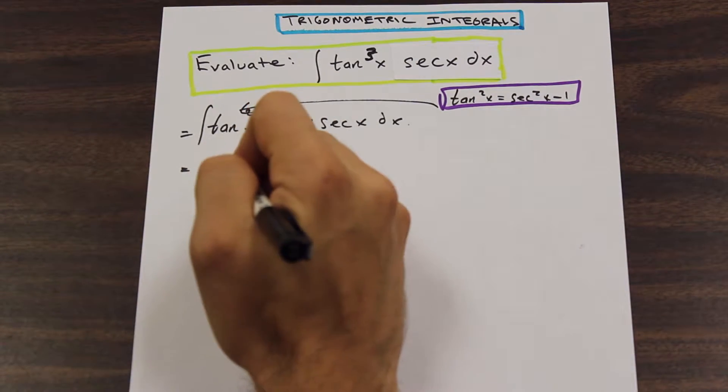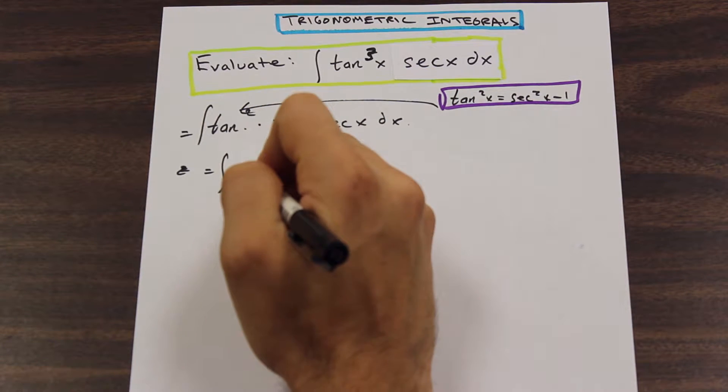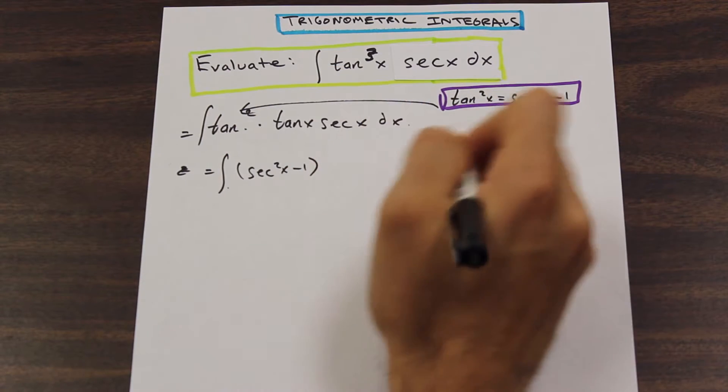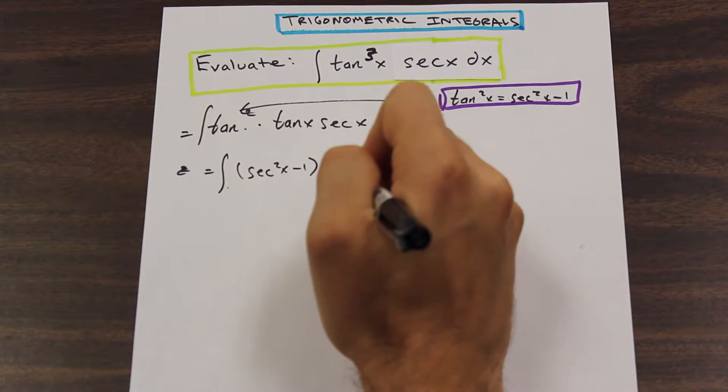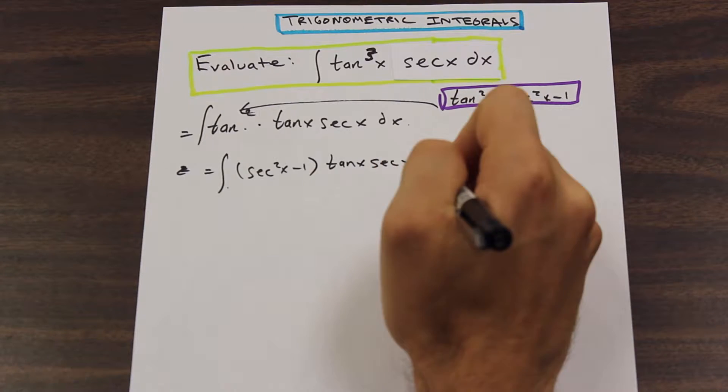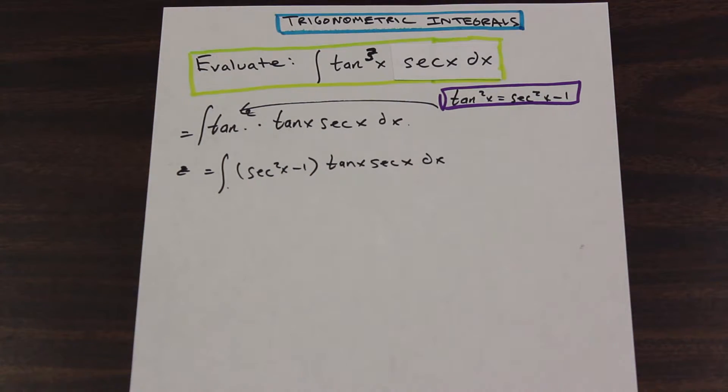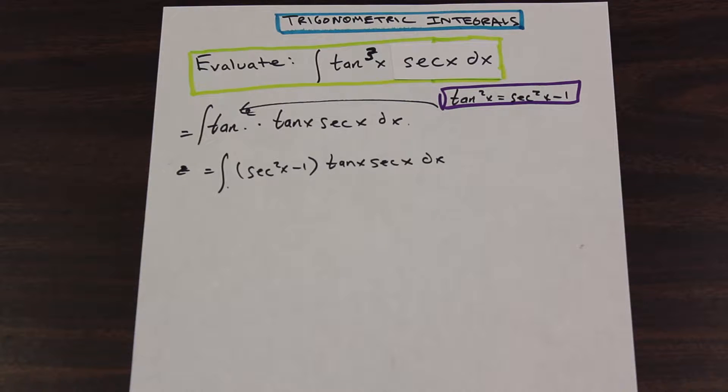And we're going to use that and plug that into tan squared x. So we have secant squared x minus 1, and that is going to be multiplied by tan x secant x dx. So at this point, I'm going to put a little link up on the screen. In the last video, I showed you a trick in which you didn't need to use u substitution in order to solve the problem.